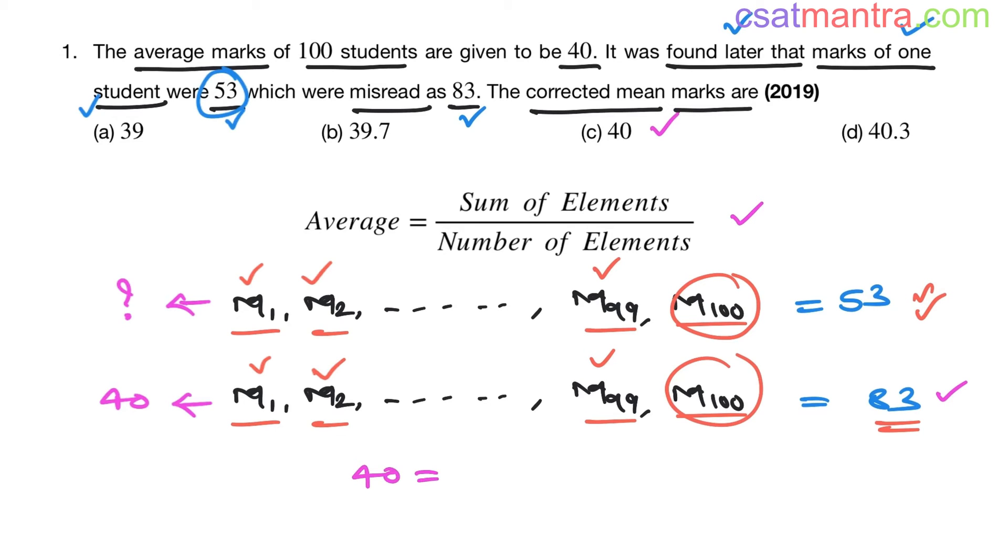Average equals sum of elements, sum of marks: M1 plus M2 plus up to M99 plus M100, which is 83, divided by number of elements. How many? 100. 100 students, 100 students' marks. So, number of elements will be 100.